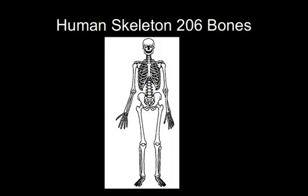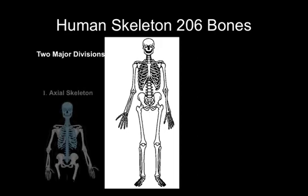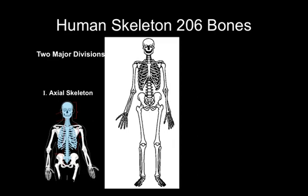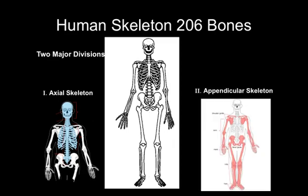Before we start listing off the names of some of these bones, let's divide the skeleton into its two major divisions. The first division we'll look at is the axial skeleton. Then we'll look at the appendicular skeleton — those are the bones of the arms and legs. That will come in the second video.